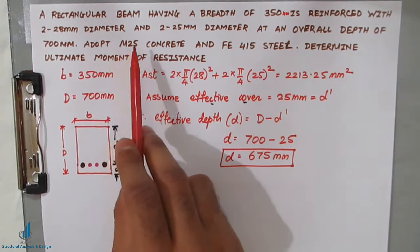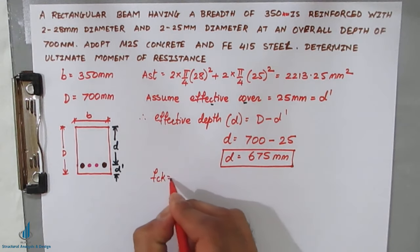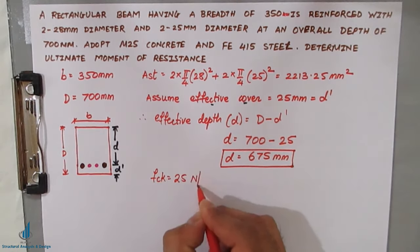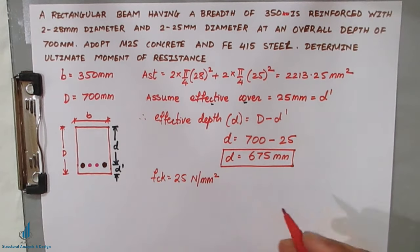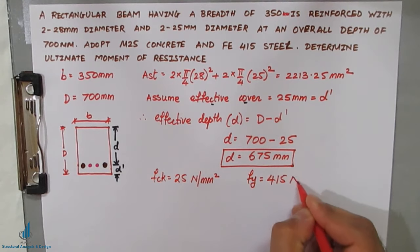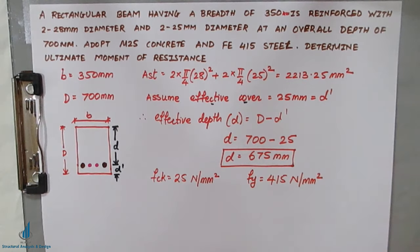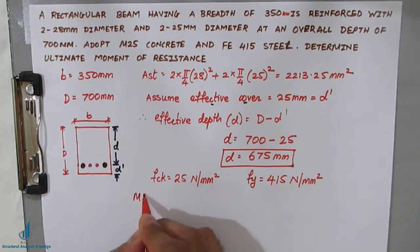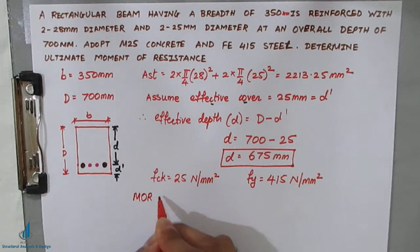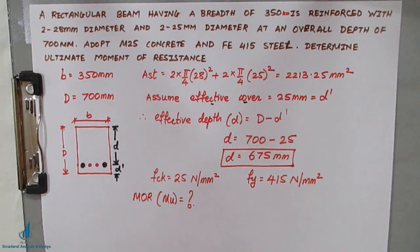The grade of concrete is FCK = 25 N/mm² and the grade of steel is Fy = 415 N/mm². This completes the given data. We need to find the ultimate moment of resistance, denoted MU, which is the unknown in this problem.